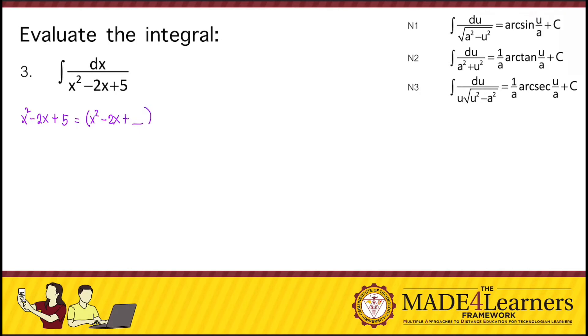So how do we find that missing constant? We just divide the middle term by 2 and raise it to the power of 2. So that's divided by 2, and raise it to the power of 2, and that would give us 1. But since we have 1 here, and this is 5, meaning we still have a lacking of 4.